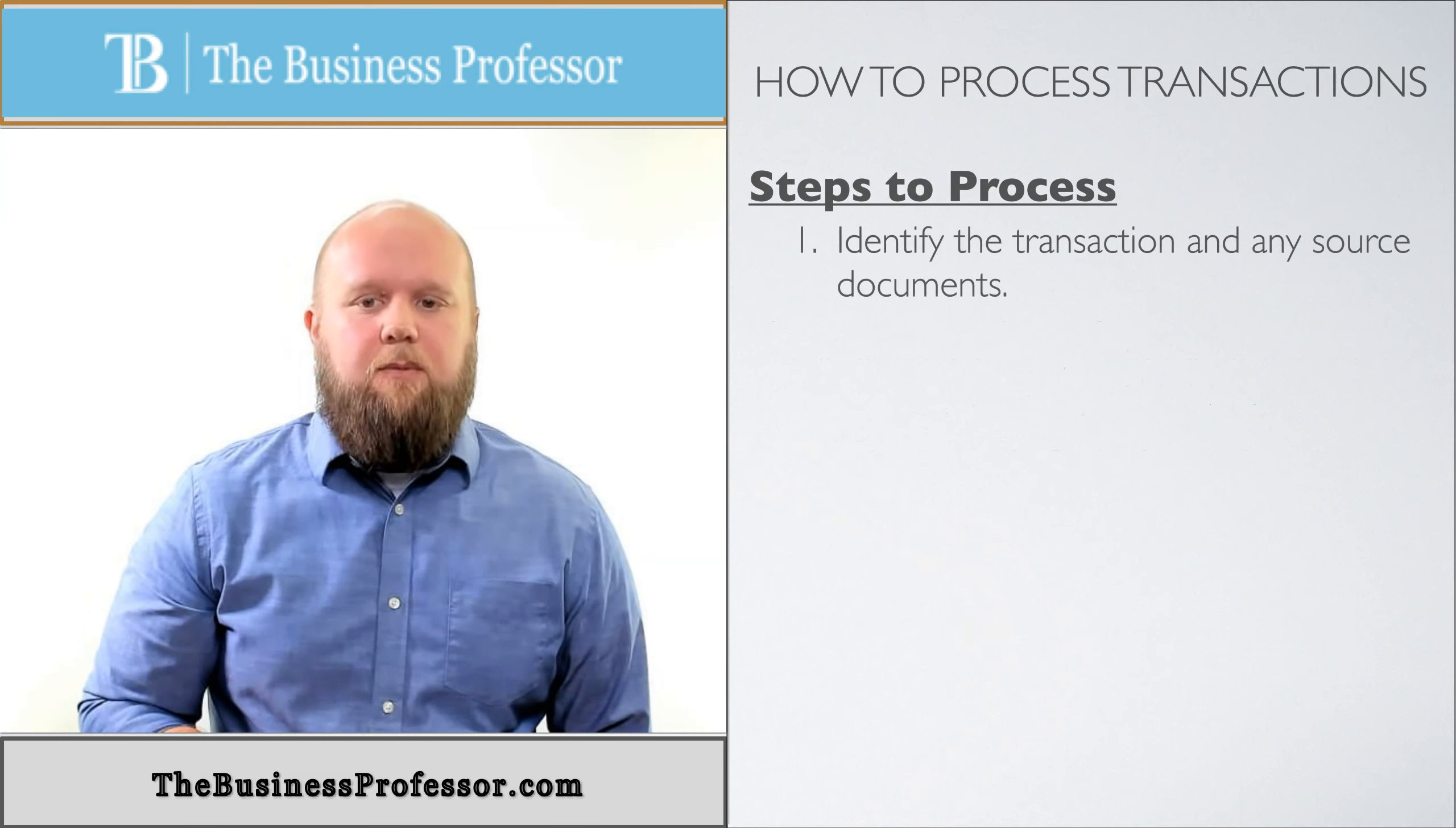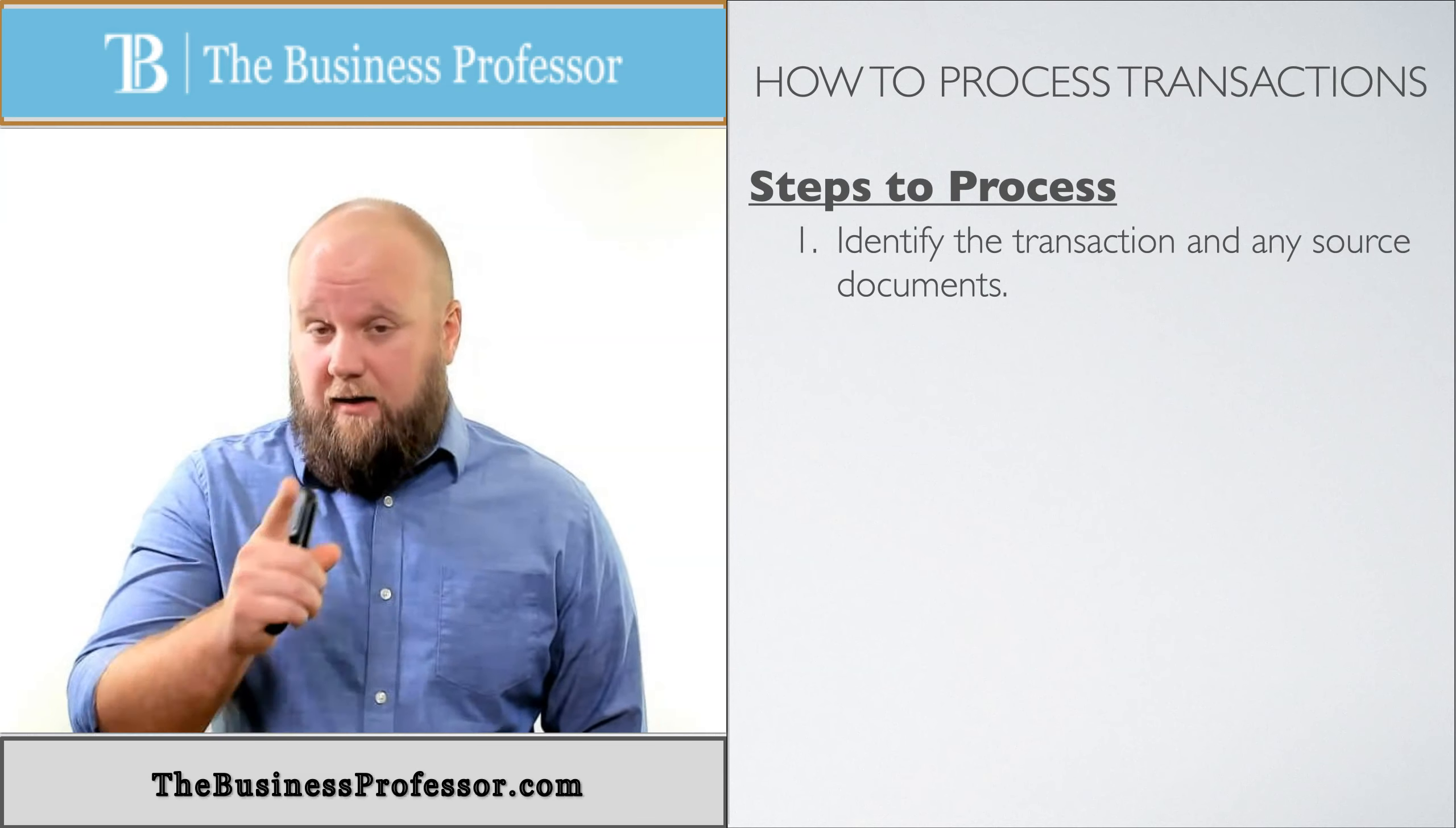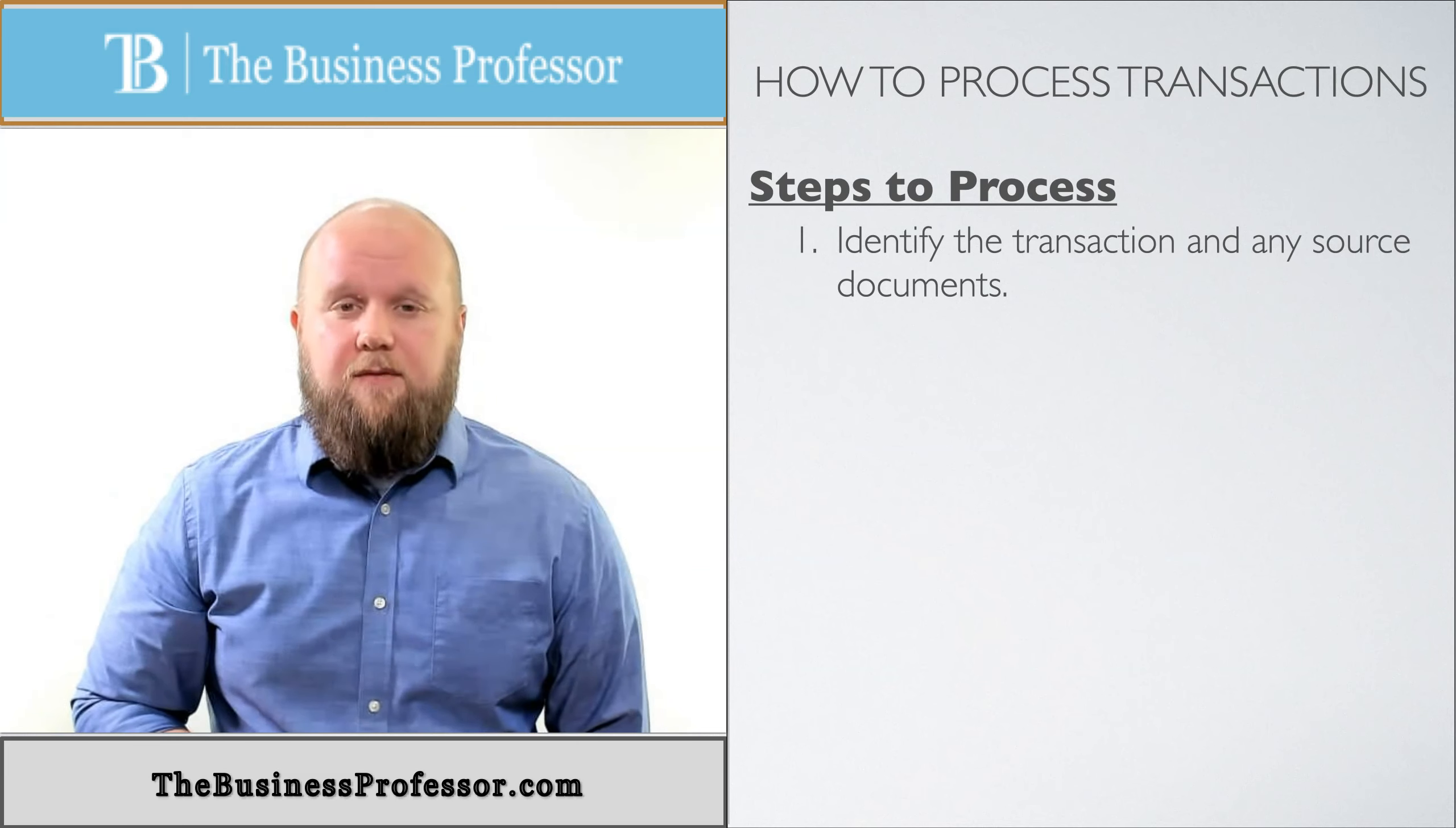So steps to process. The first step, we want to identify the transaction and any source documents. So we need to know, again, think about the three things that we do in accounting. We identify, record, and then communicate. First step is identifying.